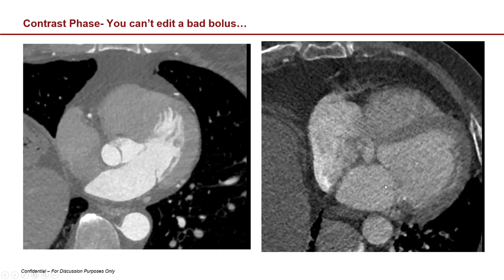Conversely, I have another example where there's contrast in both sides of the heart — more in the left side, mixing with the right side. That little squiggly line here is the right coronary artery, which is out of phase. I can't edit that because I don't have enough contrast signal in that tiny vessel to view that coronary artery. Bottom line: you can't edit a bad bolus.